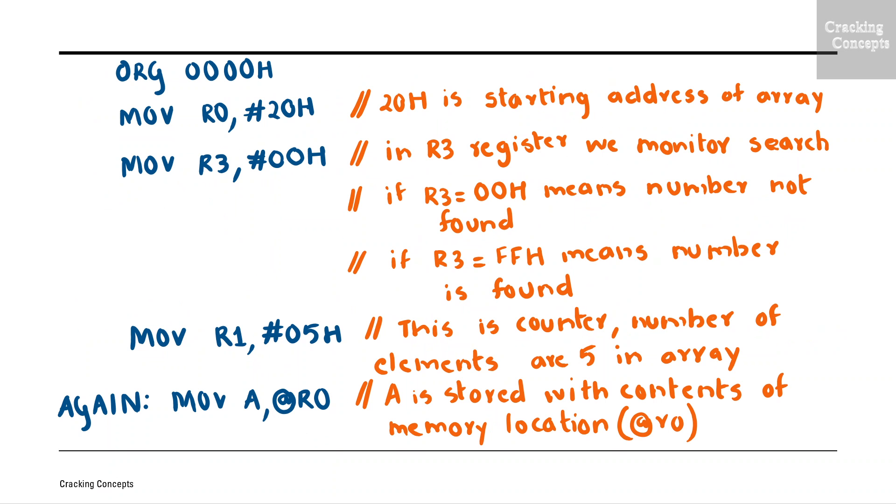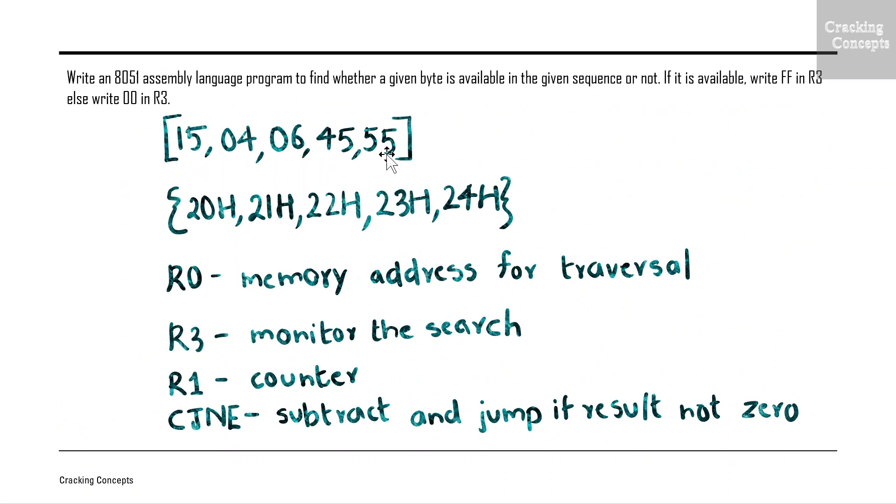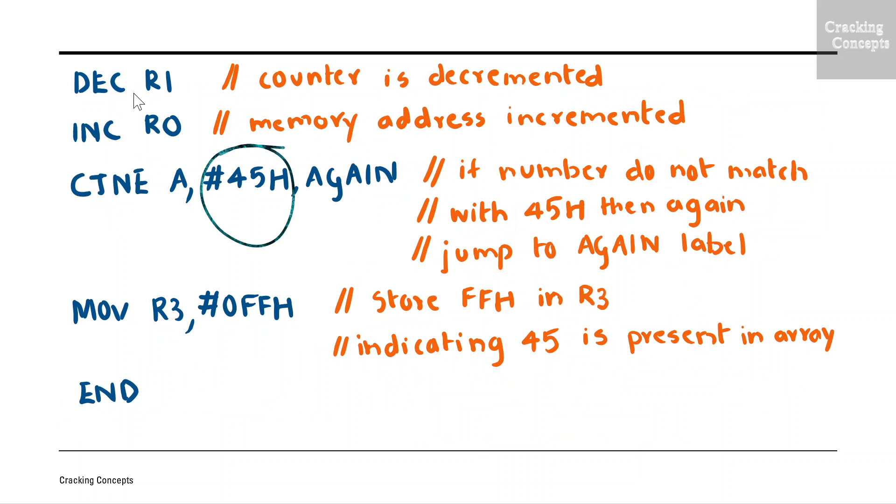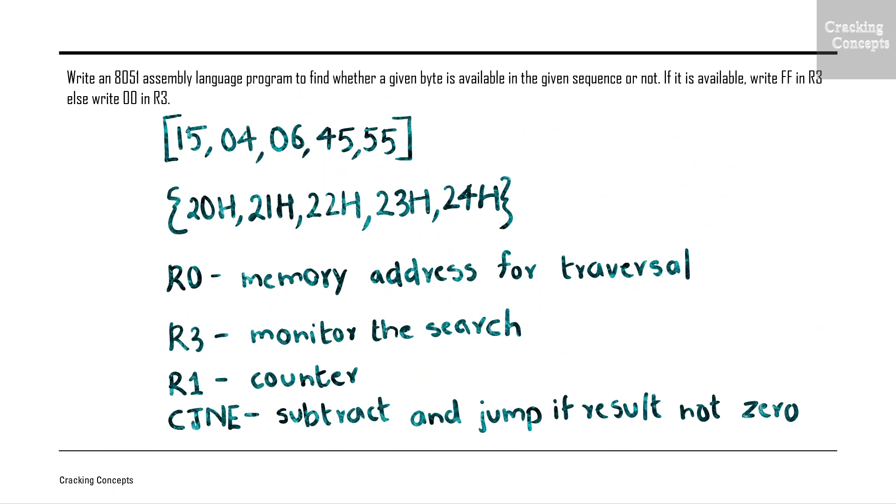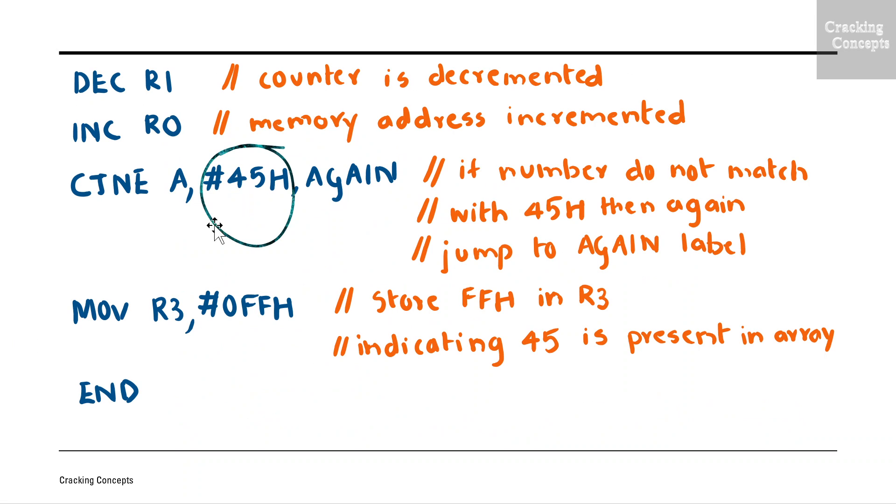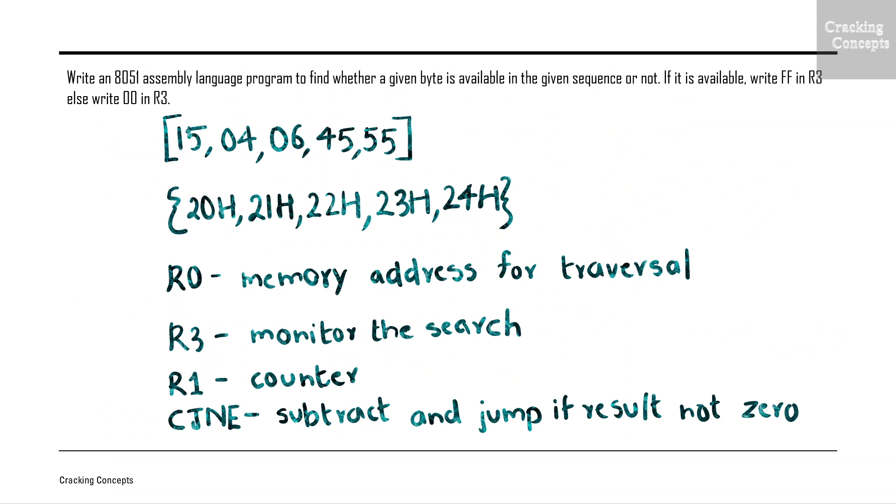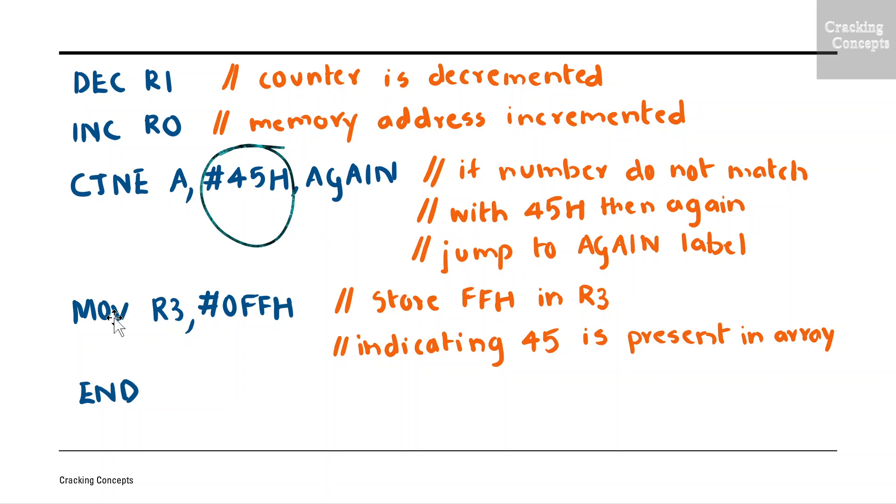Now R0 will be pointing to 23H. At the rate R0 will give us the value 45, which is copied to the accumulator. Next we will decrement the value of register R1 by 1, now R1 will be 1, and R0 is incremented. Now R0 will point to 24H. Then we will perform the comparison. A contains 45 and the immediate value is 45. On subtraction they will give us zero. Since the result is zero, the execution will start from the next instruction. As per the question, when the byte is found the value of R3 should be double F. So the next statement will be MOV R3, hash 0 double F H. Now we will end the assembly program with the END directive.